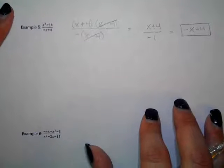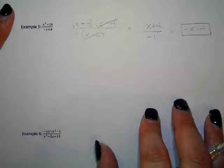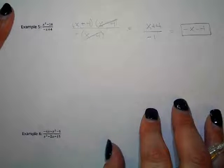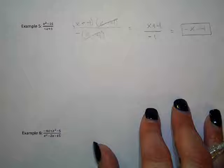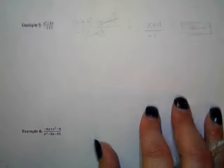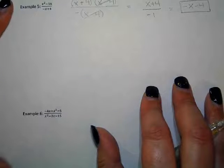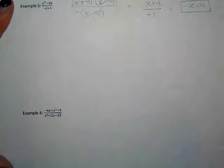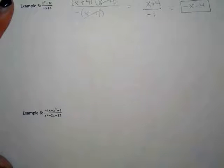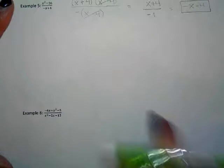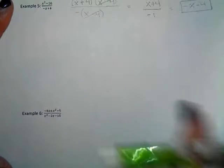Example six. Step one: write it as numerator over denominator — it is already written that way. Step two: write it in descending order — it is not currently in descending order. So we need to fix the numerator.